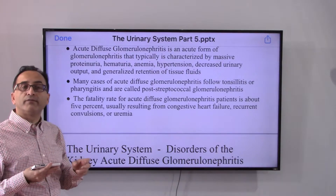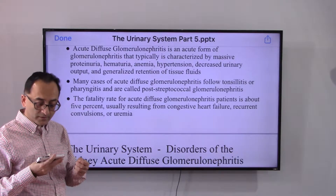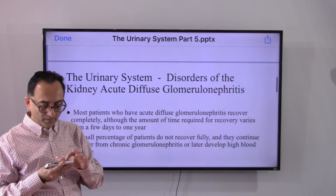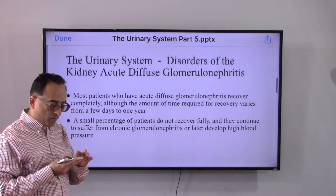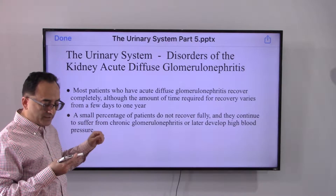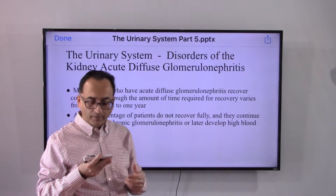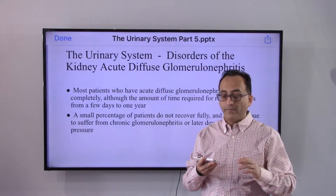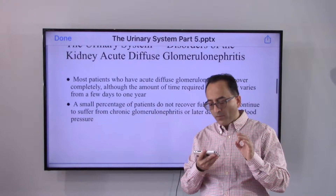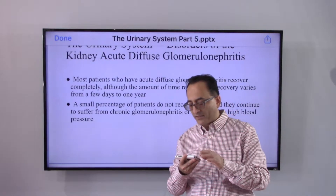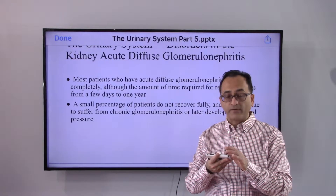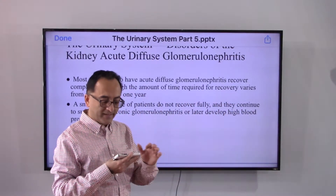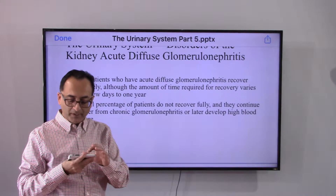The fatality in the acute form usually results from congestive heart failure, recurrent complications, or uremia — too much urea in the blood. Most patients with the acute form may recover completely, though recovery time varies from a few days to one year. A small percentage do not recover fully and may progress from acute to chronic disease, later developing hypertension.